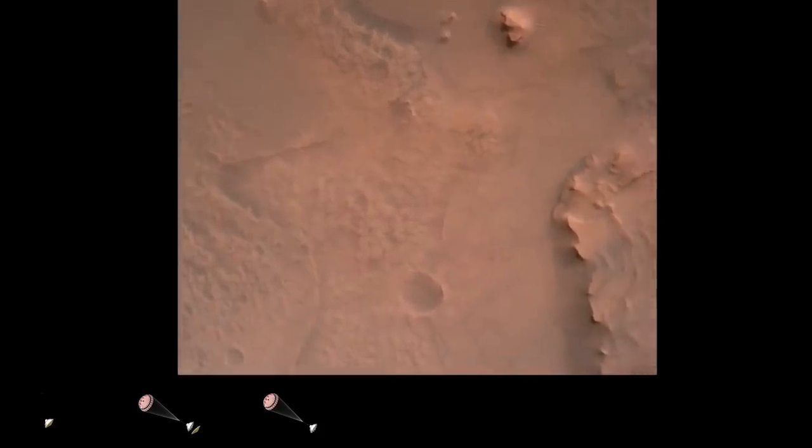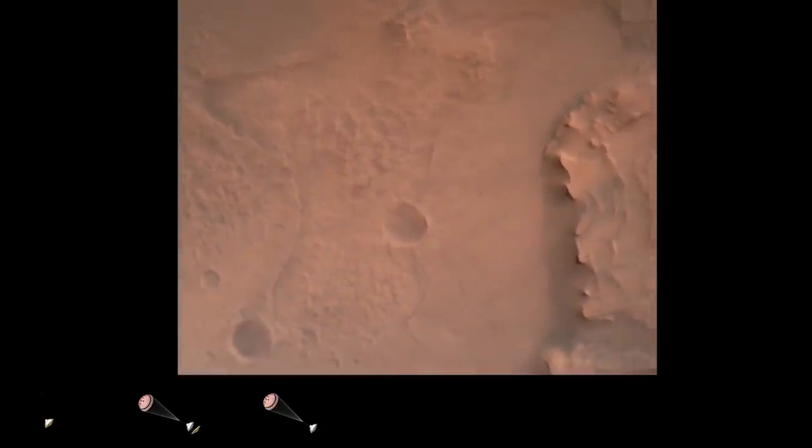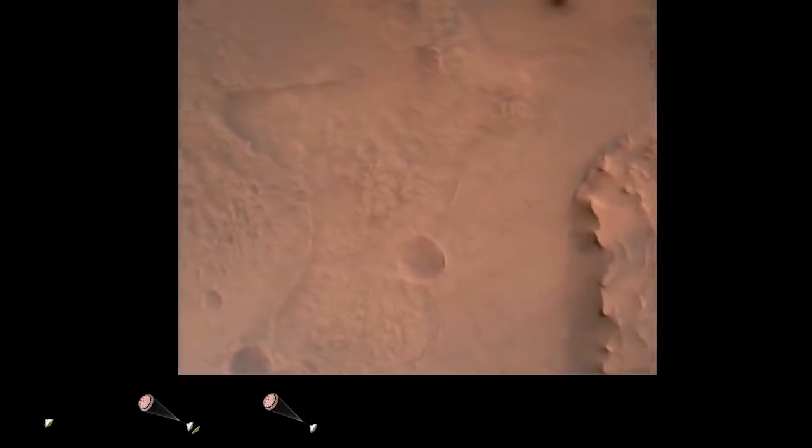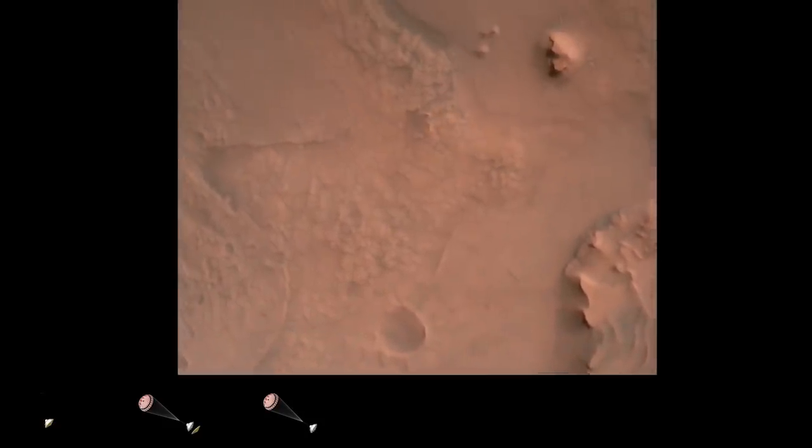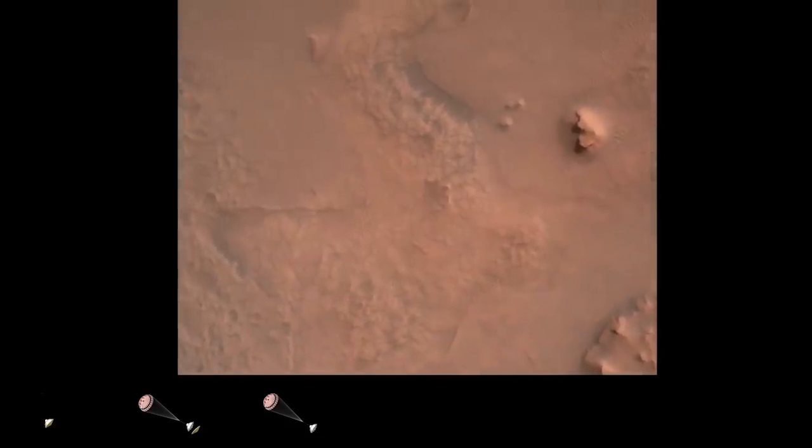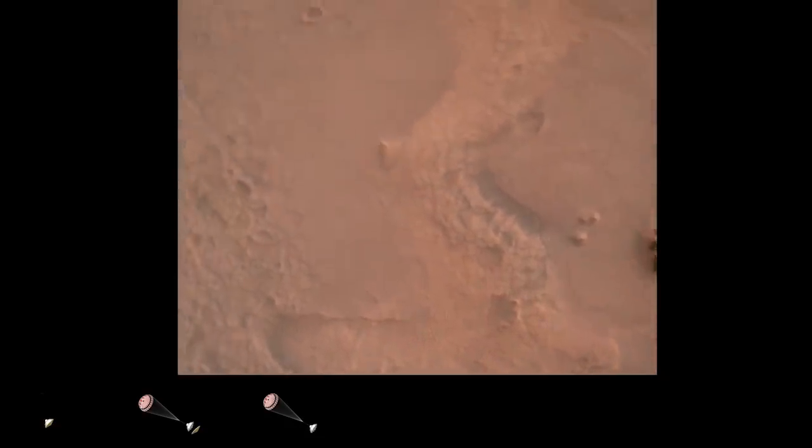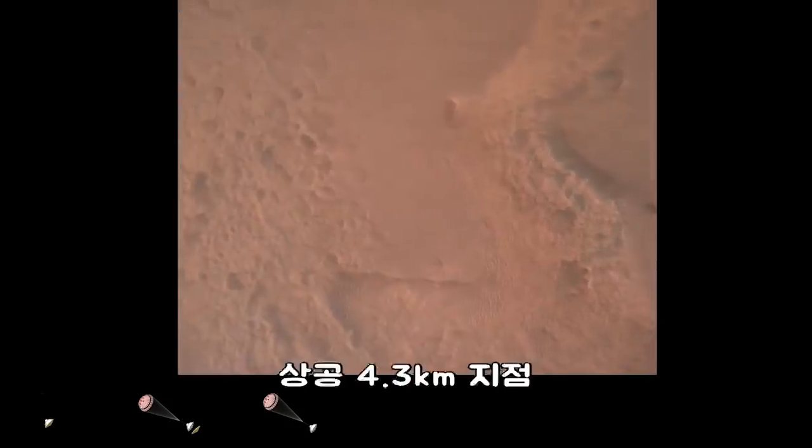Perseverance is continuing to descend on the parachute. We are coming upon the initialization of terrain relative navigation and, subsequently, the priming of the landing engines. Our current velocity is about 90 meters per second at an altitude of 4.2 kilometers.